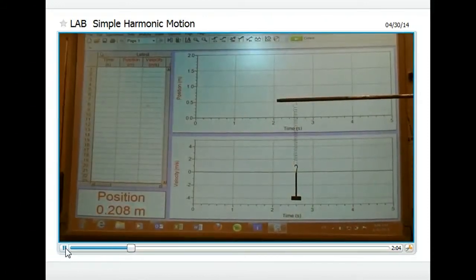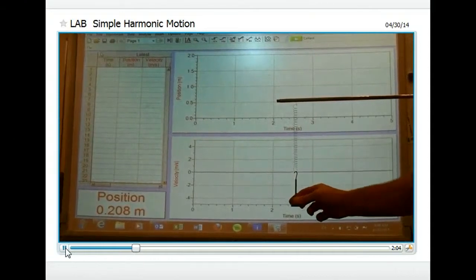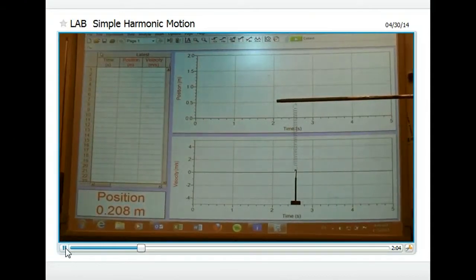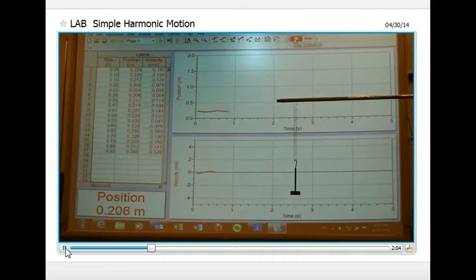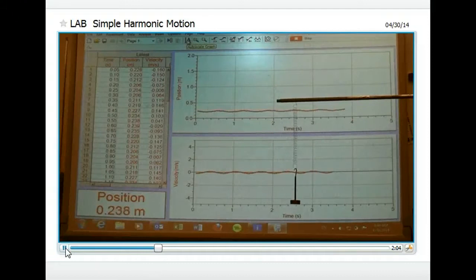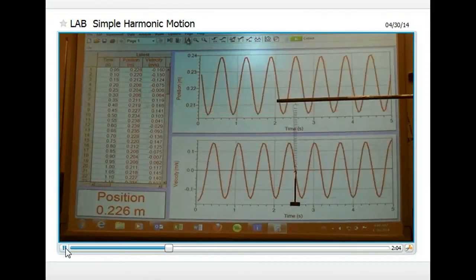The first one here will be a smaller oscillation compared to the second time. So I set it in motion, I collect my data, and I'll need to auto scale my graph, and there's my simple harmonic motion for a smaller amplitude with 50 grams.